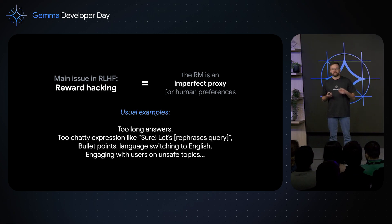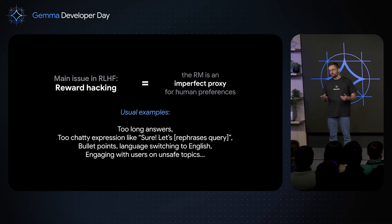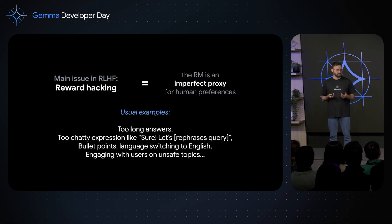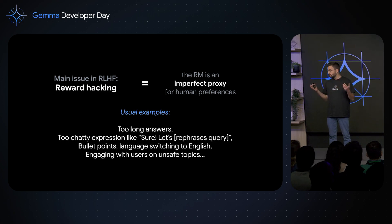It's just learning from the data it has been exposed to, and it's hard to get beyond that. Other examples of reward hacking include overly chatty expressions such as 'Sure, let me rephrase the entire query,' excessive bullet points, language switching to English — these kinds of things. Our goal in RLHF is to limit reward hacking, to train for an extended period of time, and to achieve finer alignment to human preferences.